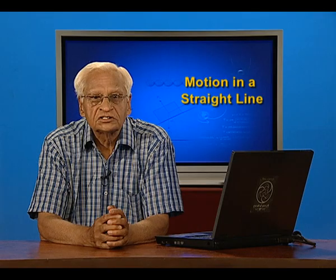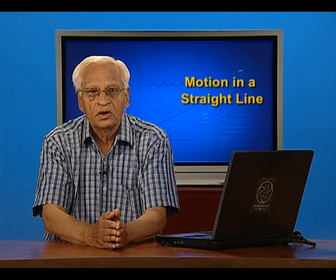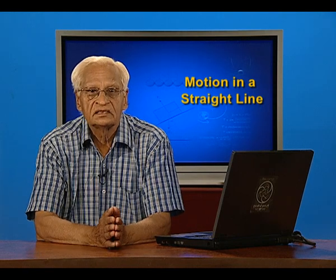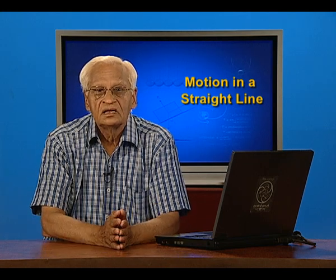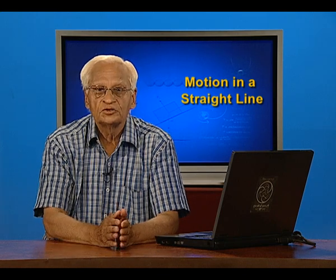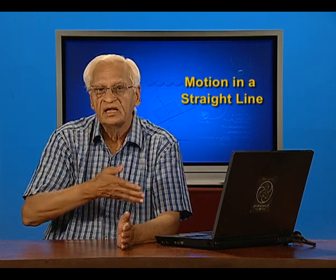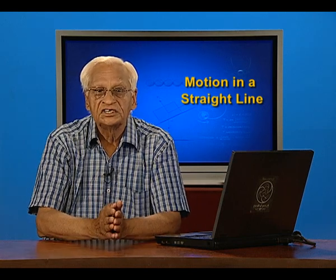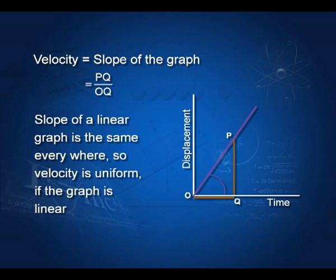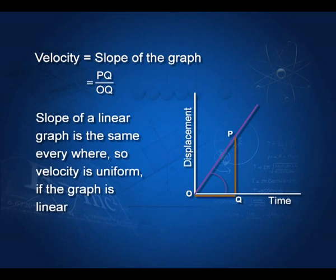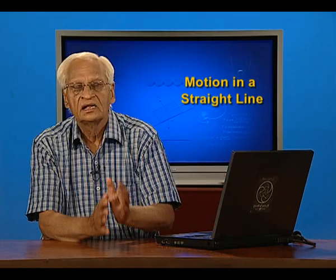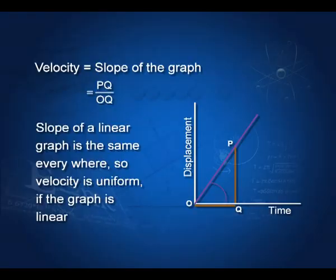Velocity is equal to the slope of the displacement-time graph, as we did in the last lecture. The slope of a linear graph is constant — it is the same everywhere. So if the graph between displacement and time is linear, then the velocity is uniform. We measure the slope by taking at a certain time the displacement divided by the time taken.